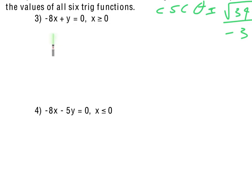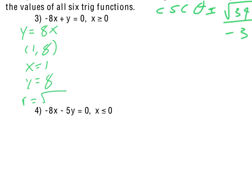For number 3, we are given the equation negative 8x plus y equals 0, considering only positive values of x. We need to use this equation to find a point, then the problem is just like 1 and 2. First, rewrite in slope-intercept form: y equals 8x. The easiest point is when x is 1, giving y equals 8. We know x and y, so we can find r: the square root of 1 plus 64, which is the square root of 65. Note that the x value of 1 satisfies the inequality x greater than 0.